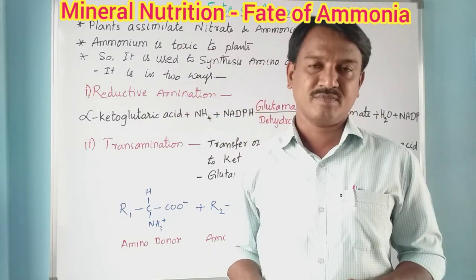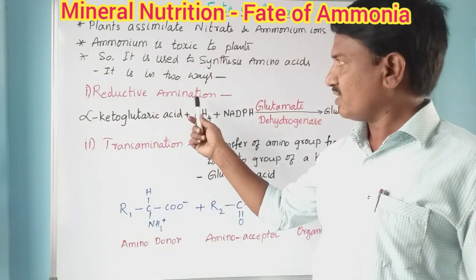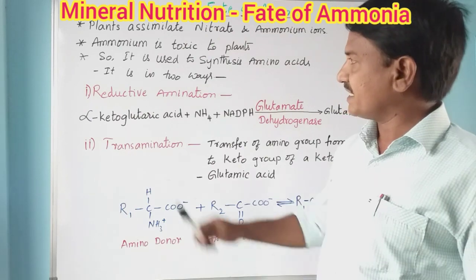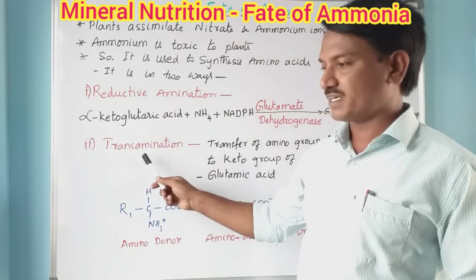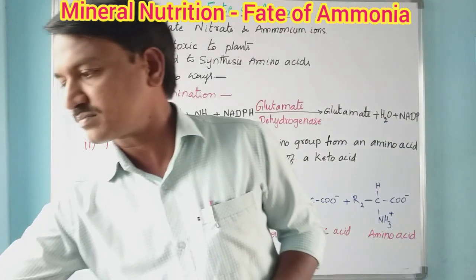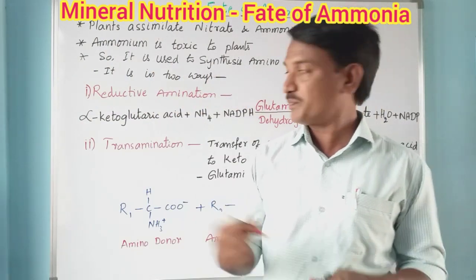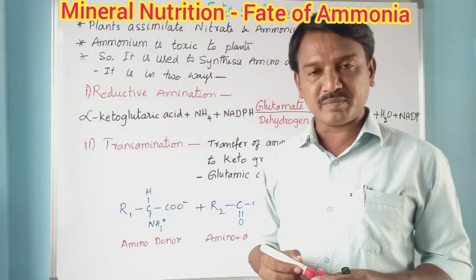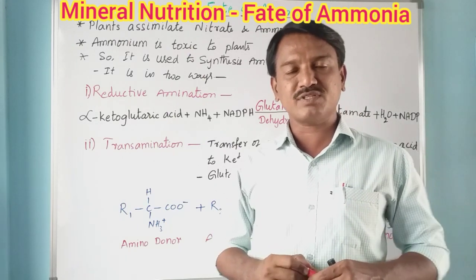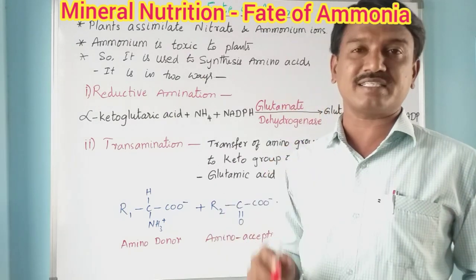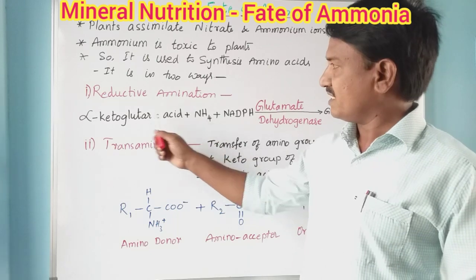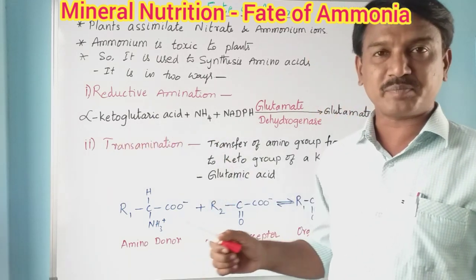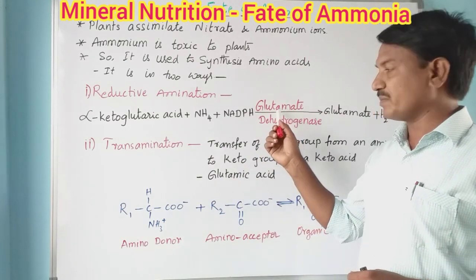Plants assimilate nitrate and ammonia. Ammonia converts into ammonium ions, which is toxic to plants, so it is used to synthesize amino acids. This happens in two steps: number one, reductive amination, and number two, transamination. In the first step — reductive amination — ammonium reacts with alpha-ketoglutaric acid.